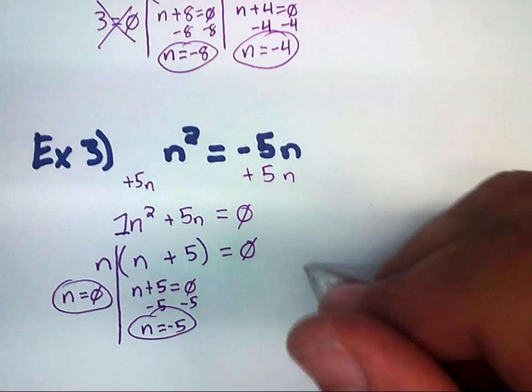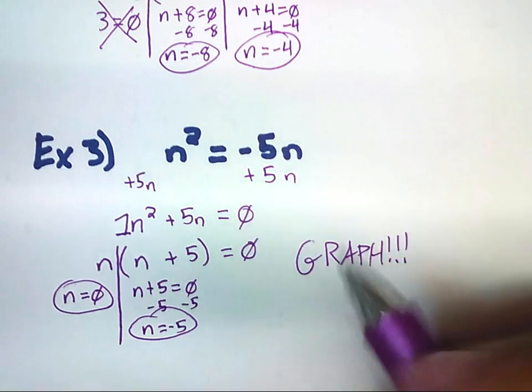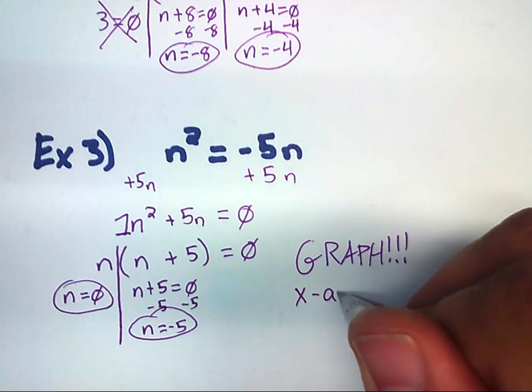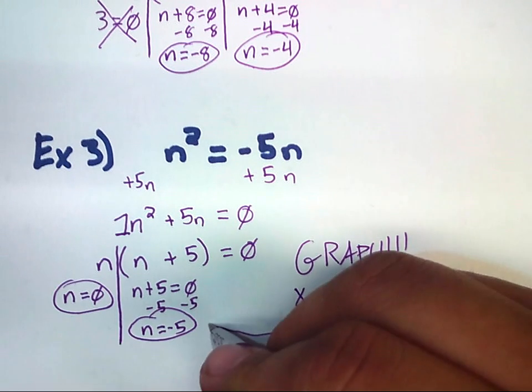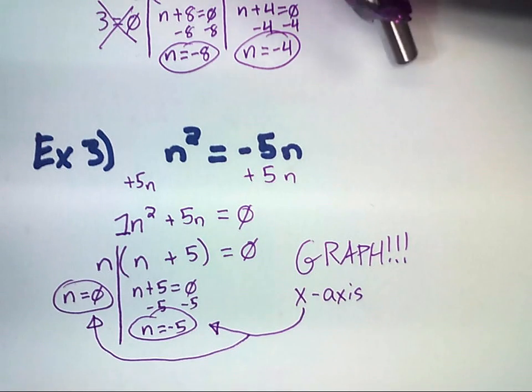And when in doubt, just remember, you can always graph to check it. That's a pretty easy way to guarantee the roots, because it will cross the x axis at these two numbers. If it doesn't do it, then you may have factored wrong. So, thanks for watching.